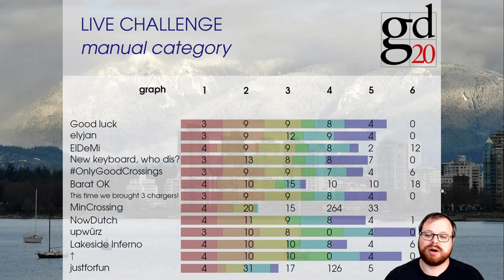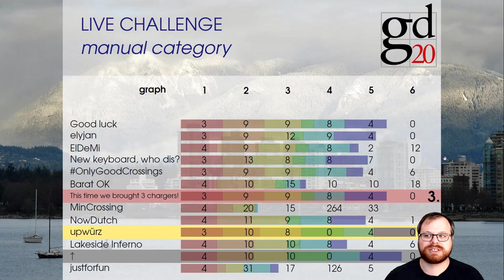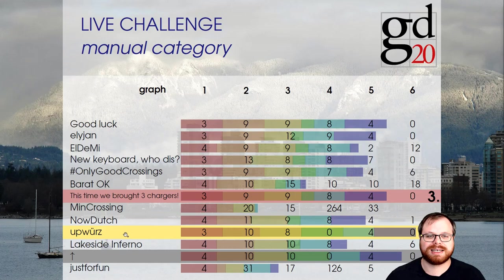The manual category winners: in third place, team 'This Time We Brought Three Chargers' consisting of Fulio Gürlio, Martin Kronemann, and Henry Förster. In second place, team 'Up Arrow' consisting of Martin Loeffler. And in first place, team 'Upwards' consisting of Jonathan Klavica and Johannes Zink. Congratulations.